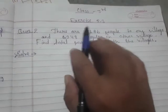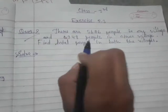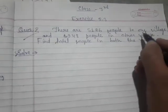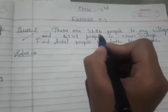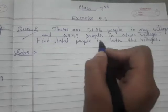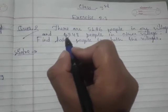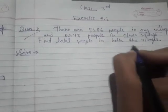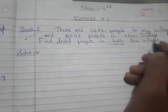Hello students, Class 3, Exercise 2.3, Question number 2. There are five thousand one hundred eighty six people in one village, and six thousand nine hundred forty eight people in another village. Find the total number of people in both villages.